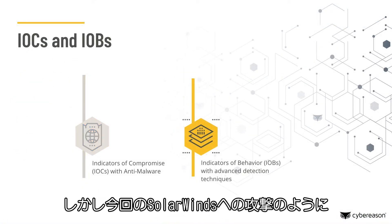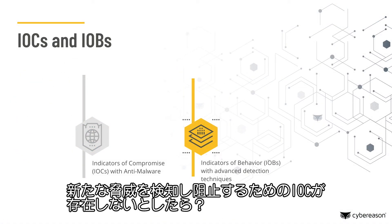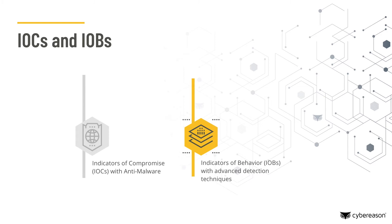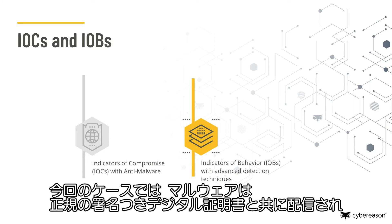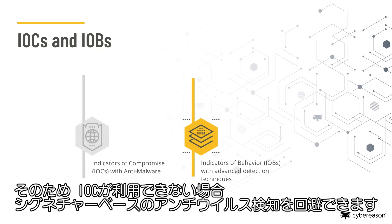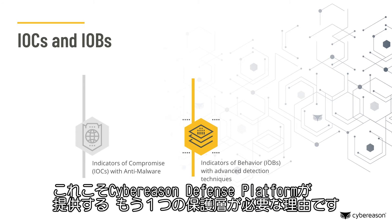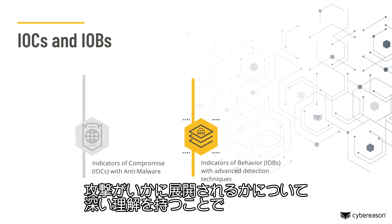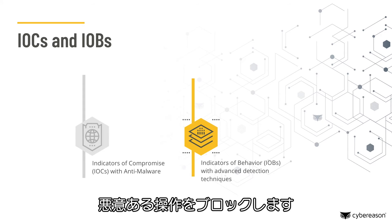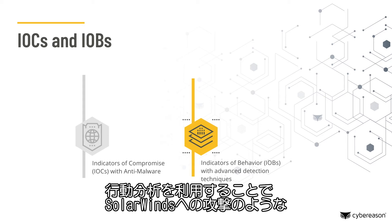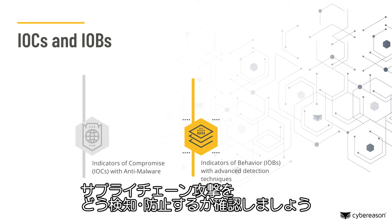But what if there were no IOCs to leverage in detecting and blocking a novel threat, as we see in this case with the SolarWinds campaign? This is where indicators of compromise and threat intelligence alone fail to protect targeted systems. In this case, the malware was delivered with a legitimate signed digital certificate, allowing it to evade signature-based AV detections if no IOCs were available. This is why the next layer of protection offered by the Cybereason Defense platform is necessary — it can block malicious operations based on behavior and a deeper understanding of how attacks evolve. Let's see how Cybereason uses behavioral analysis to detect and prevent supply chain attacks such as the SolarWinds attack.